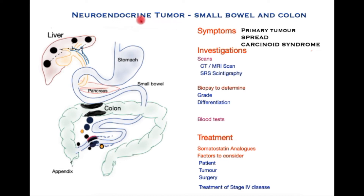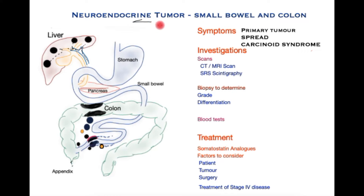This is part of the videos on neuroendocrine tumors, which are rare tumors. They tend to be less aggressive and they originate from tissue that produces hormones or chemicals, and sometimes these tissues retain that ability to secrete chemicals. We shall examine the small bowel and the colon neuroendocrine tumors.